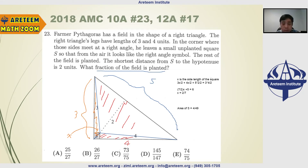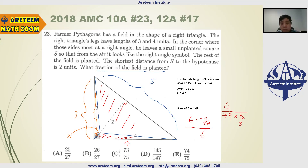The planted fraction is the total area minus the square, divided by the total area: (6 − 4/49) / 6. That simplifies to 1 minus (4/49 divided by 6), which equals 1 minus 4/294, simplified to 1 minus 2/147, giving 145/147. The answer is D.